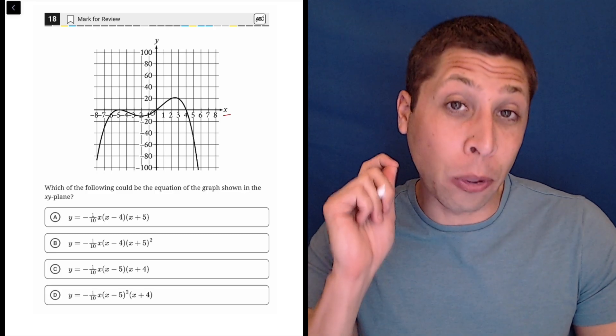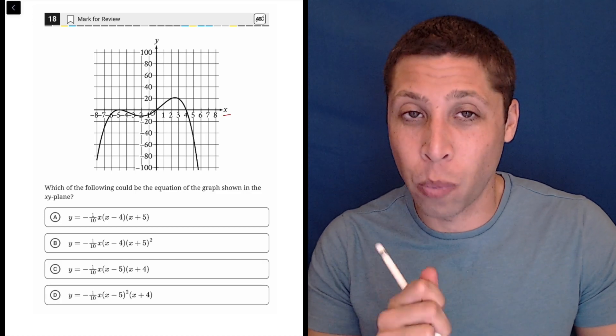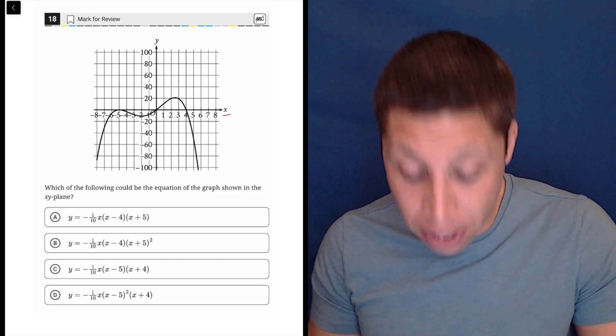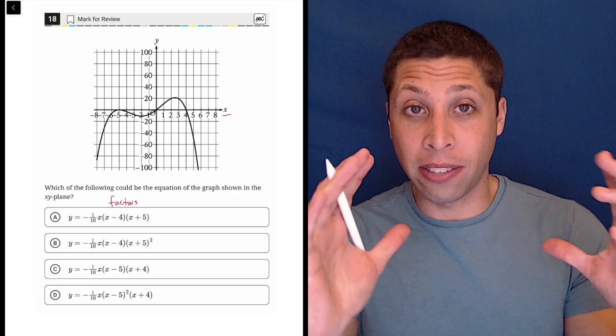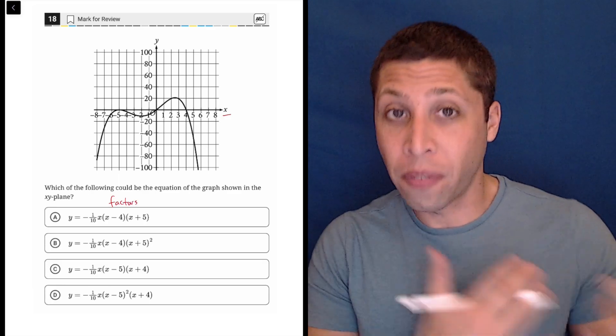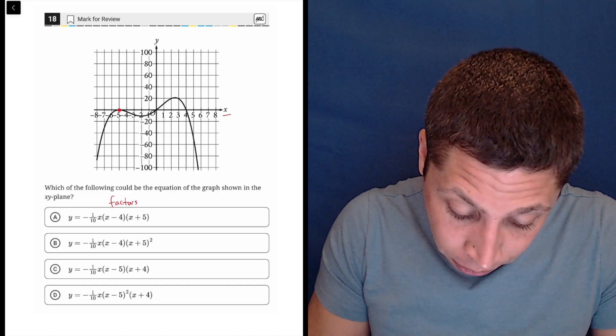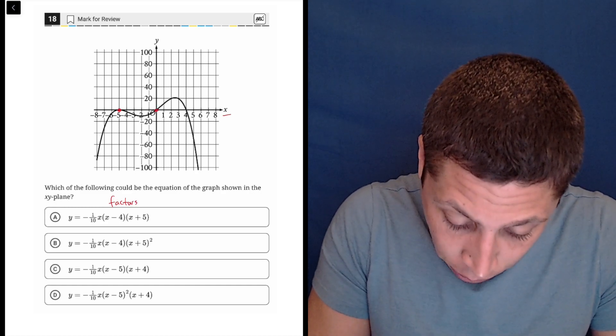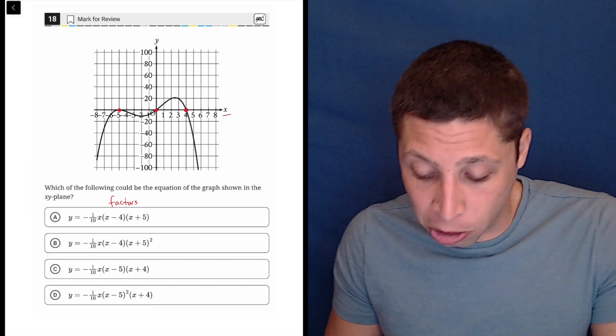Lines, we care about the y-intercept a lot, but for pretty much anything else, we're going to care a lot about the x-intercepts, where it crosses the x-axis because they appear as factors in the equation. That's what all these little parentheses pieces are, those are factors. So we see that there's one at negative five, there's one at zero, and there's one at four. So we want factors that correspond to those things.